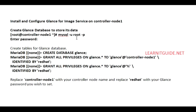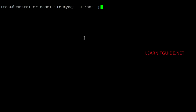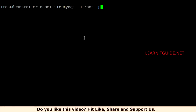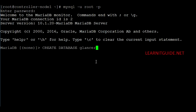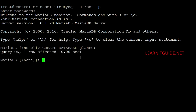First, we need to create a database for Glance. Get into the database using the command: mysql -u root -p — it will prompt you to enter the database password. After that, you have to create a database called glance and grant all privileges on the glance database from controller node 1 as well as from any host, identified by the password 'redhat'. Create the database: CREATE DATABASE glance; — hit enter, query OK, one row affected.